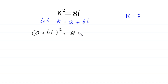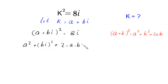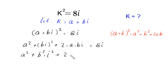By using the algebraic identity, a plus b whole squared is equal to a squared plus b squared plus 2ab, this a plus b i whole squared will become a squared plus b i whole squared plus 2 times a times b i, is equal to 8 i.